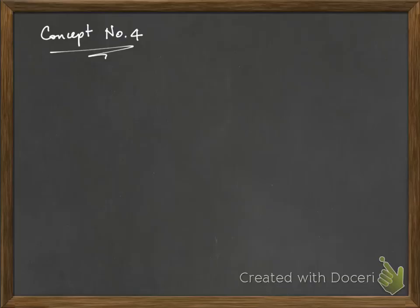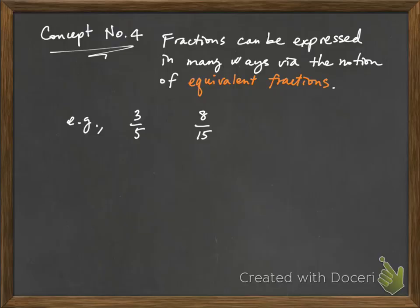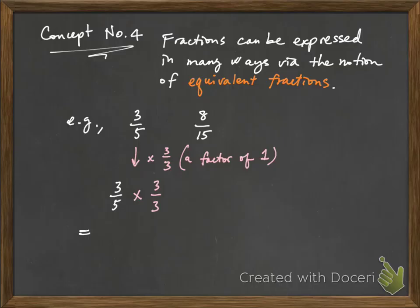Concept number four says that fractions can be expressed in many ways via the notion of equivalent fractions. We want to choose the representation that allows us to use the previous concepts easily. For example, to compare three over five with eight over fifteen, we multiply three over five by three over three — which equals one — to convert it into nine over fifteen. Now both fractions share the same denominator. Nine parts is more than eight parts, so nine-fifteenths is greater than eight-fifteenths, meaning three over five is greater than eight over fifteen.